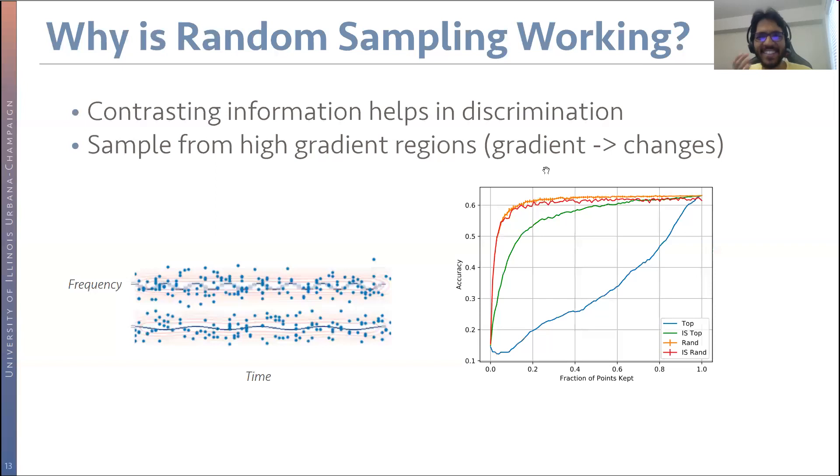Why is random sampling performing so well was the question we had when we saw these plots. Our hypothesis is that the network needs to see contrasting information to help it discriminate amongst classes. We test this hypothesis by sampling points from the time frequency plane in proportion to the gradients in the time and frequency axis. Those gradients correspond to regions of change in the signal. The regions where the signal changes a lot are the important regions that help it in classification. By sampling with this new procedure, which is this red curve here, we see that it closely matches the random sampling procedure. So what random sampling is, it's just a cheap and simple way to approximately find those points that help the network to classify the input data.